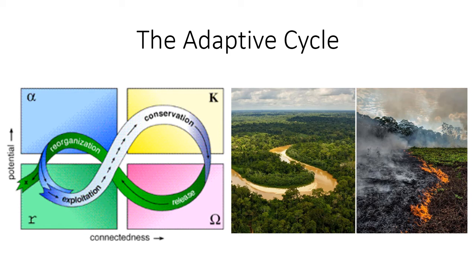Last week, we explored the key characteristics of complex adaptive systems. This week, we are exploring the different stages of how a complex adaptive system transforms. I will explain Holling's Adaptive Cycle and its four stages of change and provide an example in an ecosystem and economic context.